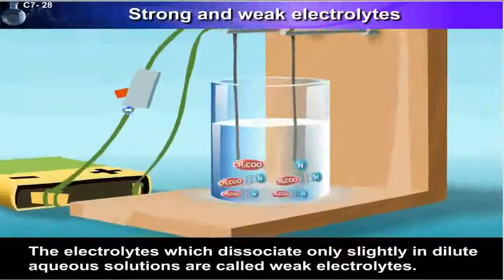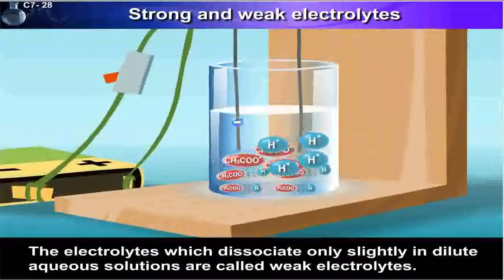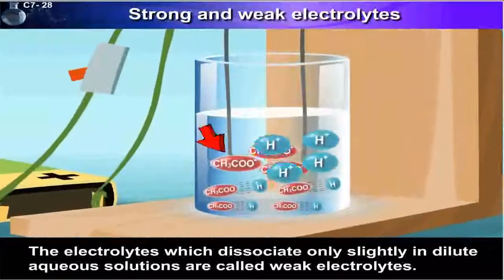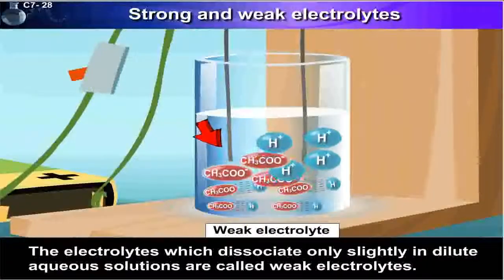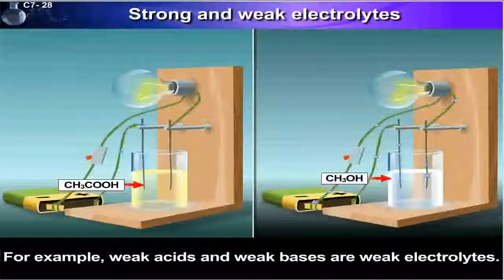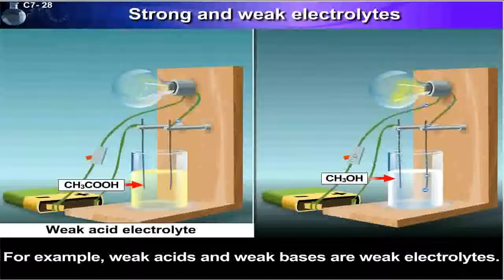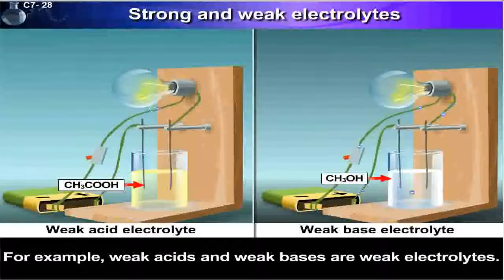The electrolytes which dissociate only slightly in dilute aqueous solutions are called weak electrolytes. For example, weak acids and weak bases are weak electrolytes.